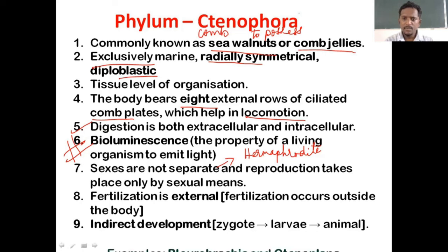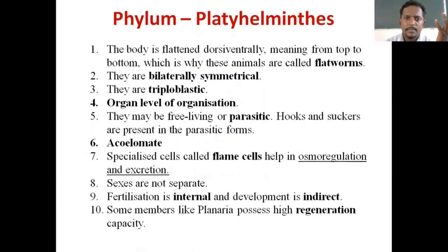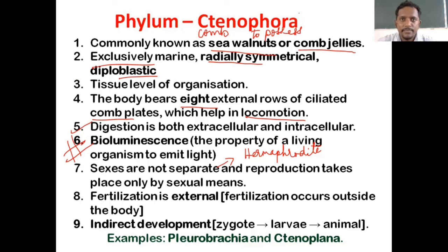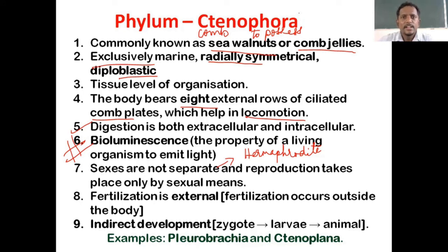Two examples you should study: Pleurobrachia and Tenoplana. There is no diagram to write for this phylum. If asked to write general characters of phylum Tenophora, write them as shown. If asked a direct question like what is bioluminescence, then go with explanation. For other characters like radially symmetrical, diploblastic, exclusively marine — just state them without defining each term.